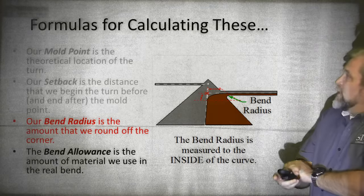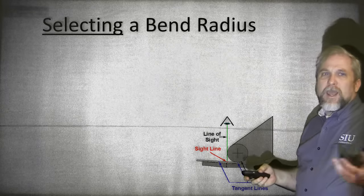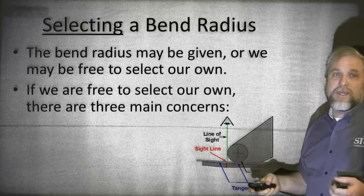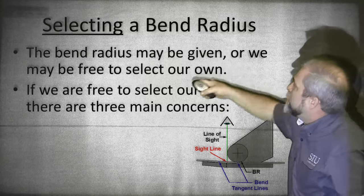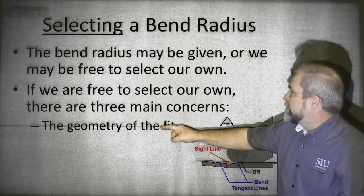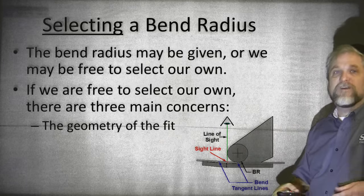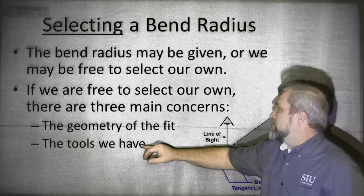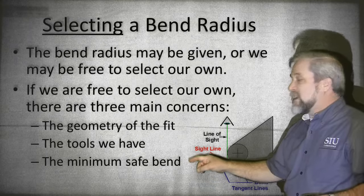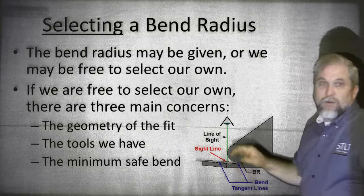Continuing along — the bend radius. We don't calculate our bend radius, we select it. They may specify it when they tell us to make the part, but if not, we select it ourselves. There are three things to consider: first, it needs to fit — too large a bend radius may not fit in position. Second, we need the proper radius dies to make that corner. Third, we cannot exceed the minimum safe bend — we can't bend it tighter than the minimum allowable.